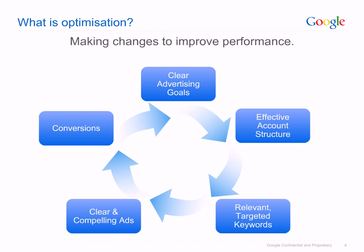Optimization is the process of making changes to an account to improve its overall performance. Optimization is a cyclical process, starting with ensuring that clear advertising goals are defined for your campaigns. From there, it is important to review the account structure to ensure that the campaigns and ad groups are aligned to the website being advertised and are relevant to the product or service being promoted. The keywords chosen must be checked to ensure that they are relevant, cost-effective and targeted. Clear, compelling ad texts containing calls to action will increase the click-through rate of ads. And lastly, ensure that conversions online are being tracked effectively.